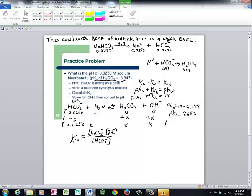Now we have pKb but need Kb. We get Kb by taking the negative antilog of pKb: 10^(-7.653) = 2.22 × 10^(-8).